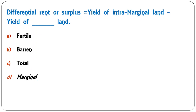Differential rent or surplus equals yield of intramarginal land minus yield of dash land — fertile, barren, total, or marginal land? The correct answer is marginal land. This is the formula used by Ricardo to calculate differential rent or surplus rent in the Ricardian theory of rent.